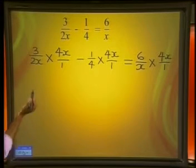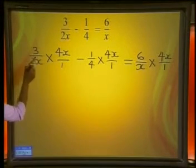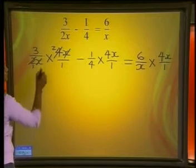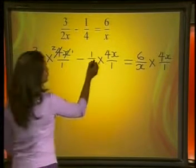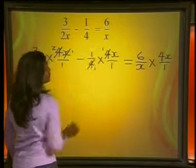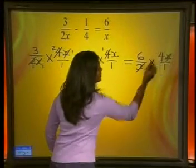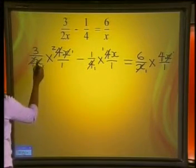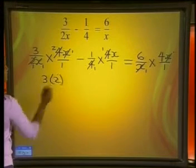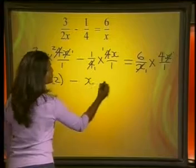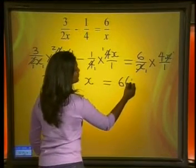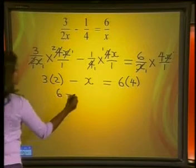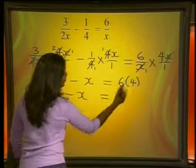Now we need to cancel out terms. 2 goes into 2 once. 4 divides by 2 twice. The x's divide into each other once. 4 goes into 4 once. 4 goes into 4 once. The x's divide into each other and we end up with 1. So we are left with 3 multiplied by 2 minus x is equal to 6 times 4. Let's multiply out: 3 times 2 is 6, minus x is equal to 6 times 4, which is 24.